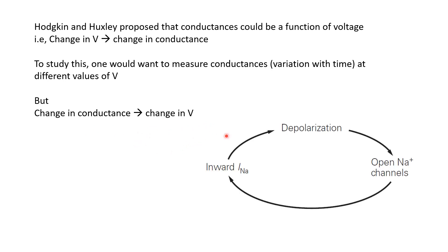To take a concrete example: a sufficiently large depolarization causes opening of sodium channels. When sodium channels open, they allow sodium ions to flow inwards, making the membrane potential even more positive, causing further depolarization and further opening of sodium channels. So the membrane potential keeps rising. It would be useful if the membrane potential could rise and then stay steady at a particular value so we could measure the sodium conductance at that value, but because the membrane potential is continuously changing, it is difficult to measure sodium conductance as a function of voltage.